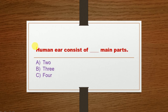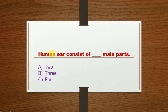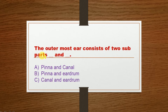Next question: The human ear consists of dash main parts. Option A: 2, Option B: 3, Option C: 4. The correct option is Option B: 3. Next question: The outermost ear consists of two sub-parts — dash and dash.